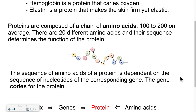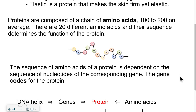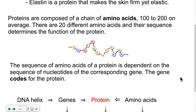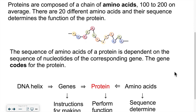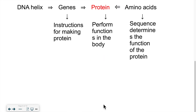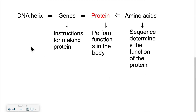Depending on the sequence of amino acids, you're going to have a specific protein that is made, and how we know how to assemble it is based on the code we find inside genes. So putting all these pieces of information together: we have the DNA helix, which contains the genes — the instructions for making proteins. Those proteins perform different functions in the body, and they are made of amino acids assembled in a specific sequence, which determines what function the protein will play.